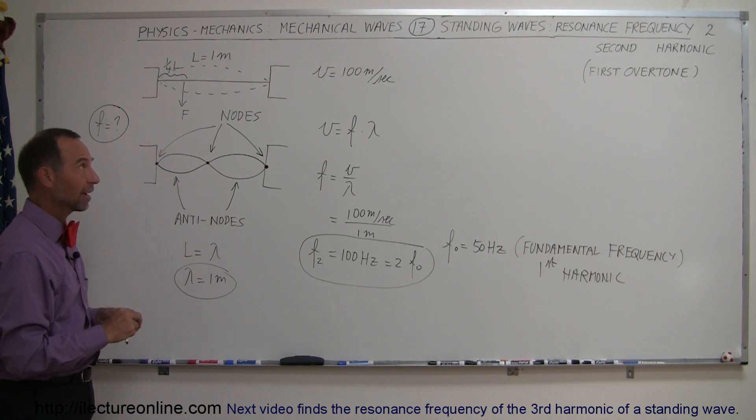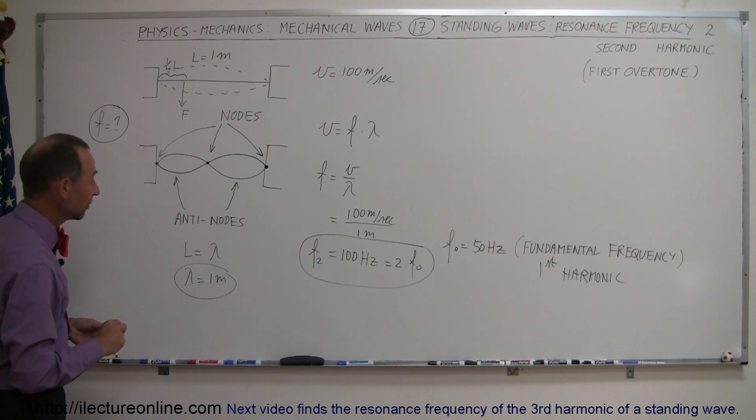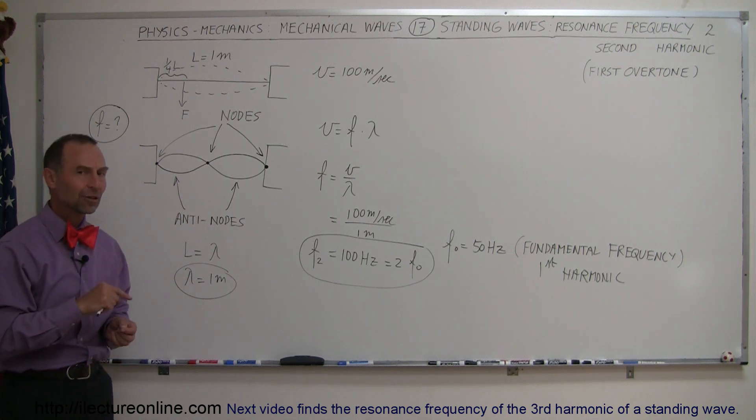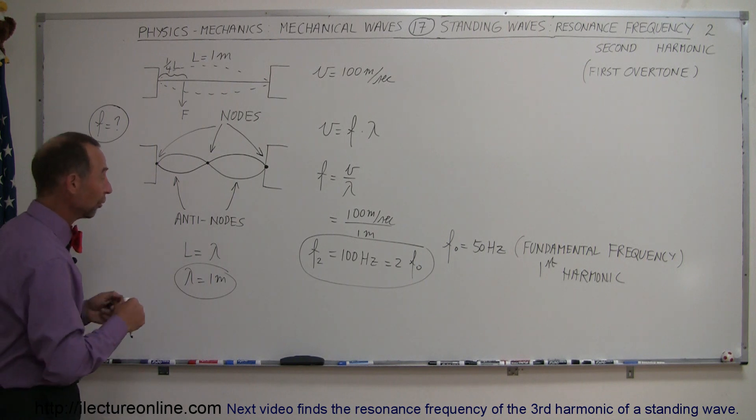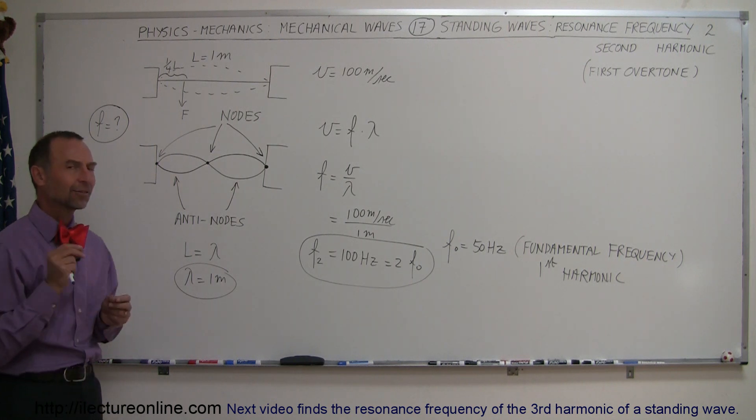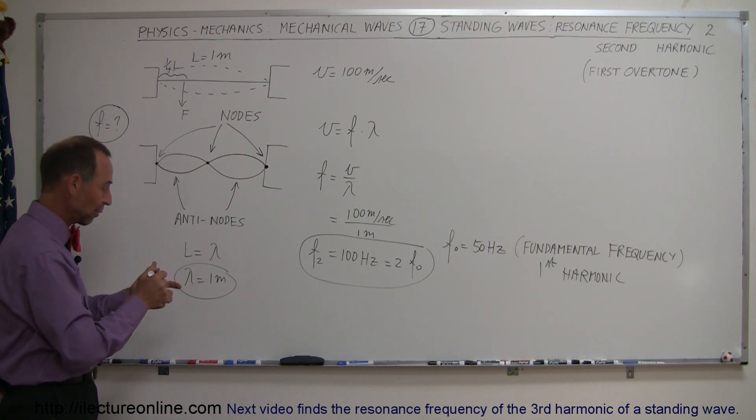Alright, then that's how you find the first overtone or the second harmonic of a wave. And when we come back to the next video, we're going to show you how to find the third harmonic. Of course, I think it's starting to get the pattern. We're going to plug the string in a different location to get a different kind of waveform. So, come back and see what that looks like.